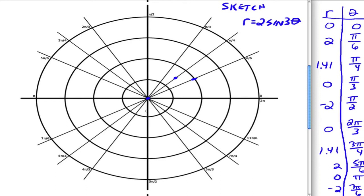At pi over 2, we're out at negative 2. So it would be down here. Agreed, pi over 2, and then negative 2. And at 2 pi over 3, we're back at 0. At 3 pi over 4, we're at 1.4, so somewhere out here. At 5 pi over 6, we're out at 2. At pi, we're back to 0.